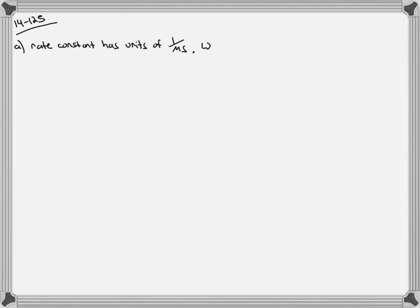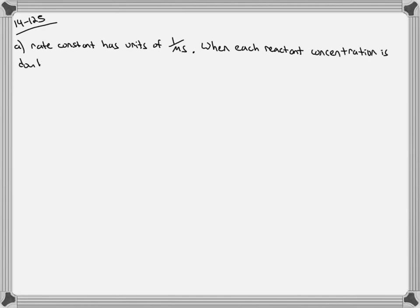Part A wants us to know what the order of the reaction is with respect to each reactant. We were given a table of initial rates. We recognize that the rate constant in the second table has units of 1 over molarity·seconds, so the overall order of the reaction needs to be 2. When we look at the table with the initial rates, we notice that when we double the concentration of each reactant, we double the rate of the reaction. So it must be first order with respect to each reactant, as opposed to second order with respect to one reactant and zero order with respect to the other.